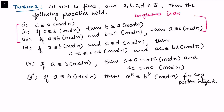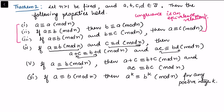In fact, combining these three properties, congruence is an equivalence relation. In the fourth property, if a is congruent to b modulo n and c is congruent to d modulo n, then we can add or multiply these two congruences with the same modulus. In the fifth property, if a is congruent to b modulo n we can add or multiply by the same quantity c on both sides, and we can also raise to the power k for positive integer k.